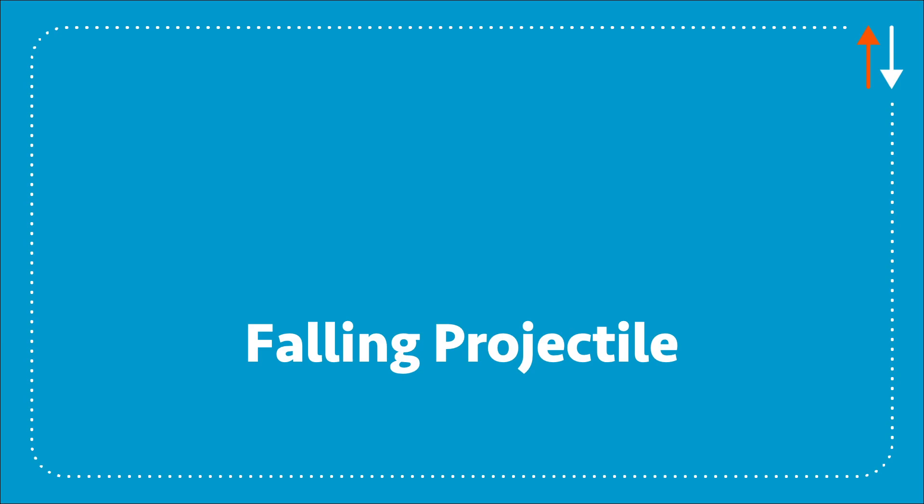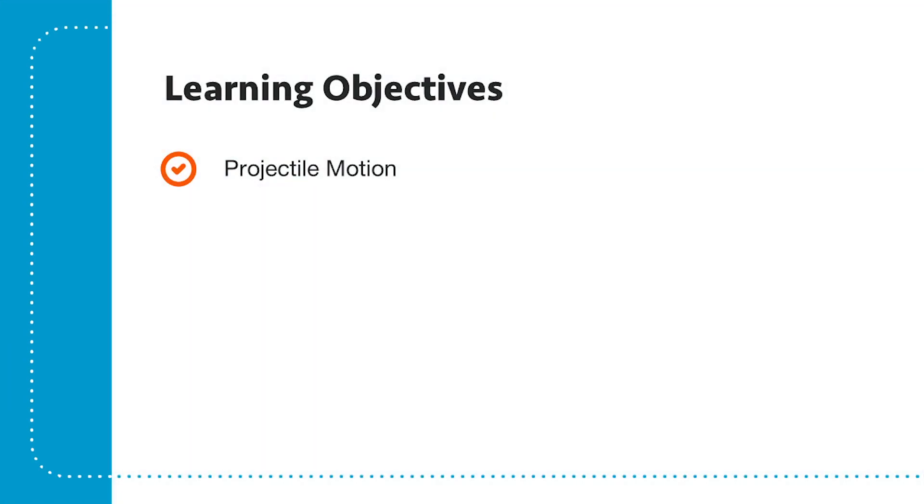I'm going to be doing a problem today looking at falling projectiles. Falling projectiles means just the projectile with no acceleration, so released from the hand of somebody. Projectile motion is something you're going to do a lot in this course, and we're going to do a number of different types of solution approaches, and this one is kind of a middling to a kind of complex problem.